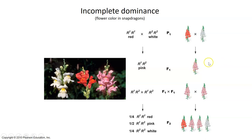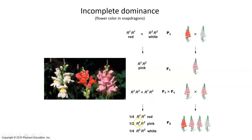If you do a monohybrid cross and self the F1s — crossing pink to pink — you'll see in the F2 generation a one-to-two-to-one ratio. One quarter will be homozygous for the R1 allele and red, one quarter homozygous for the R2 allele and white, and one half will be heterozygous and pink. So in incomplete dominance, the genotypic ratio of one to two to one is reflected in the phenotypic ratio of one to two to one.